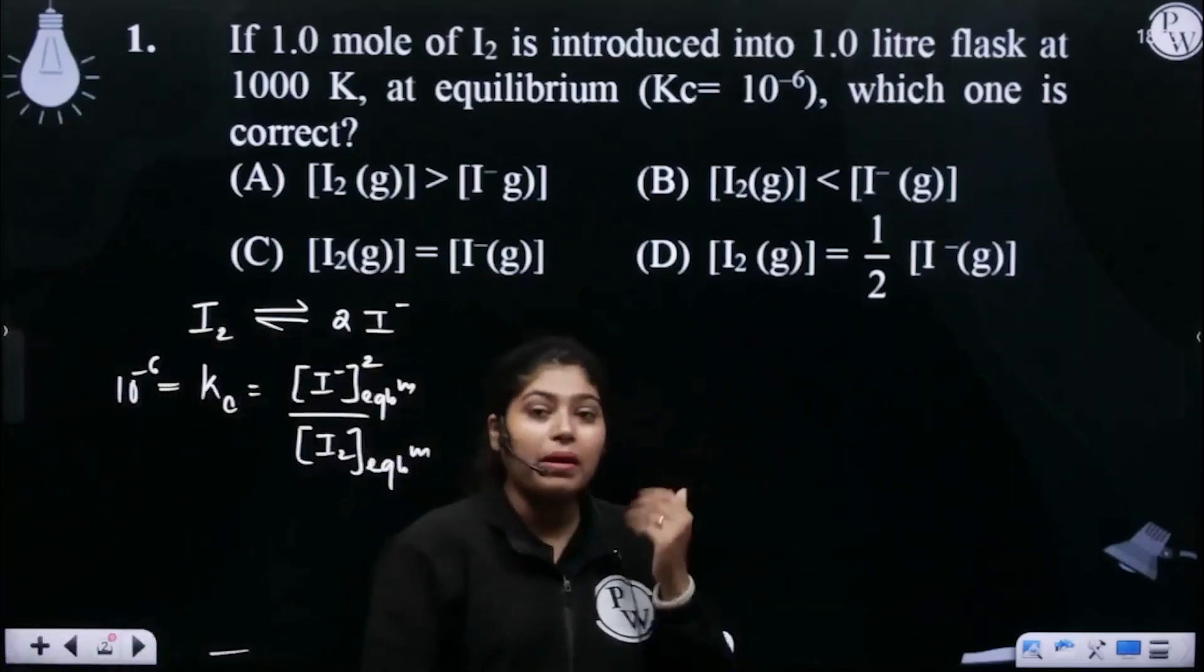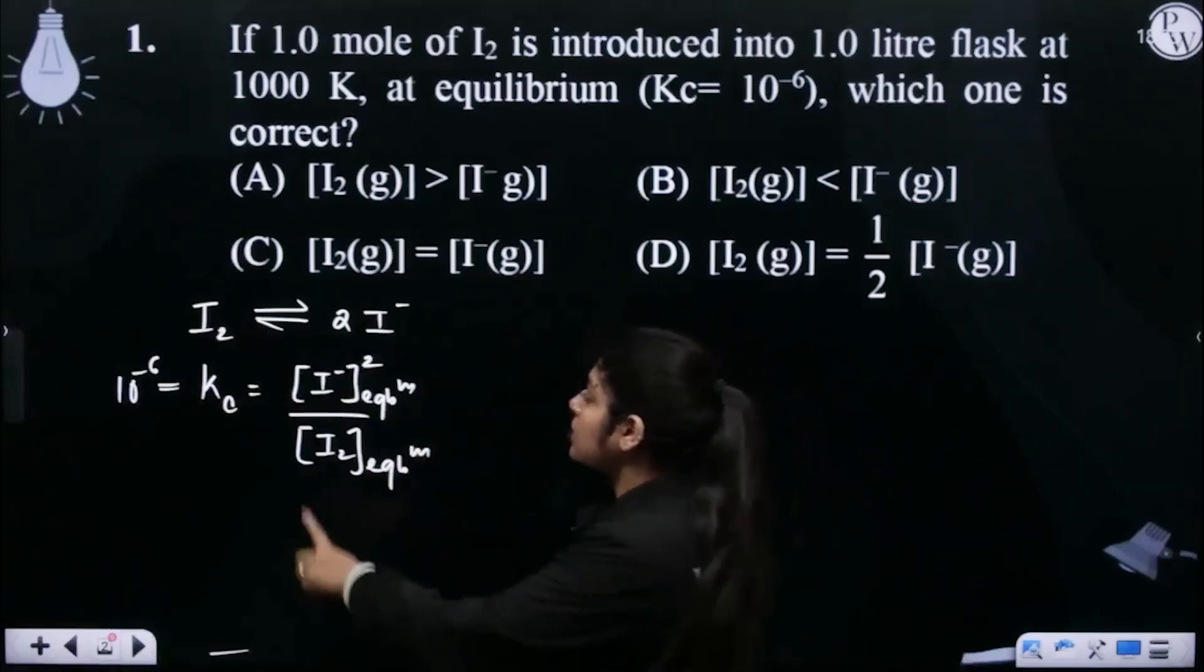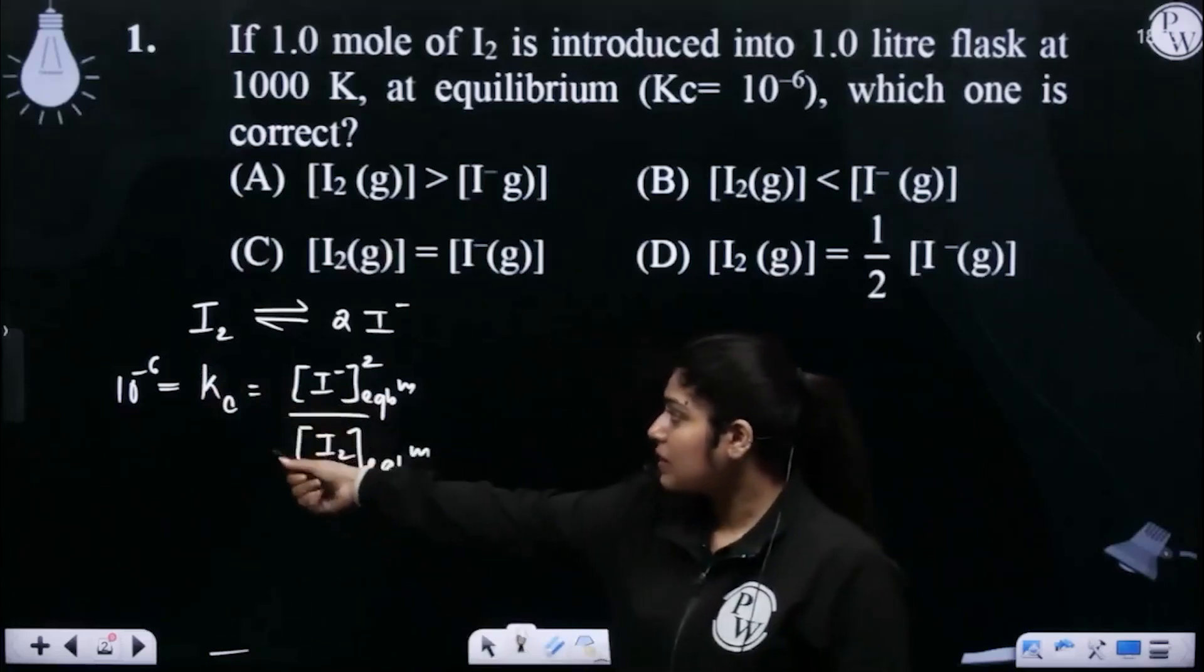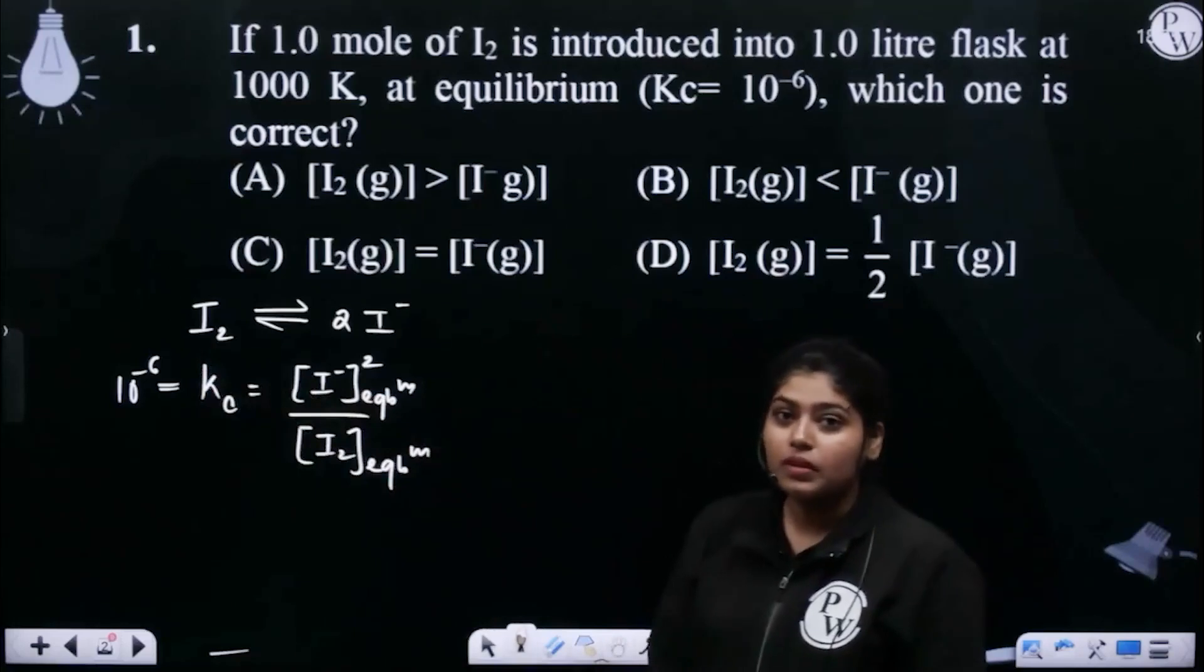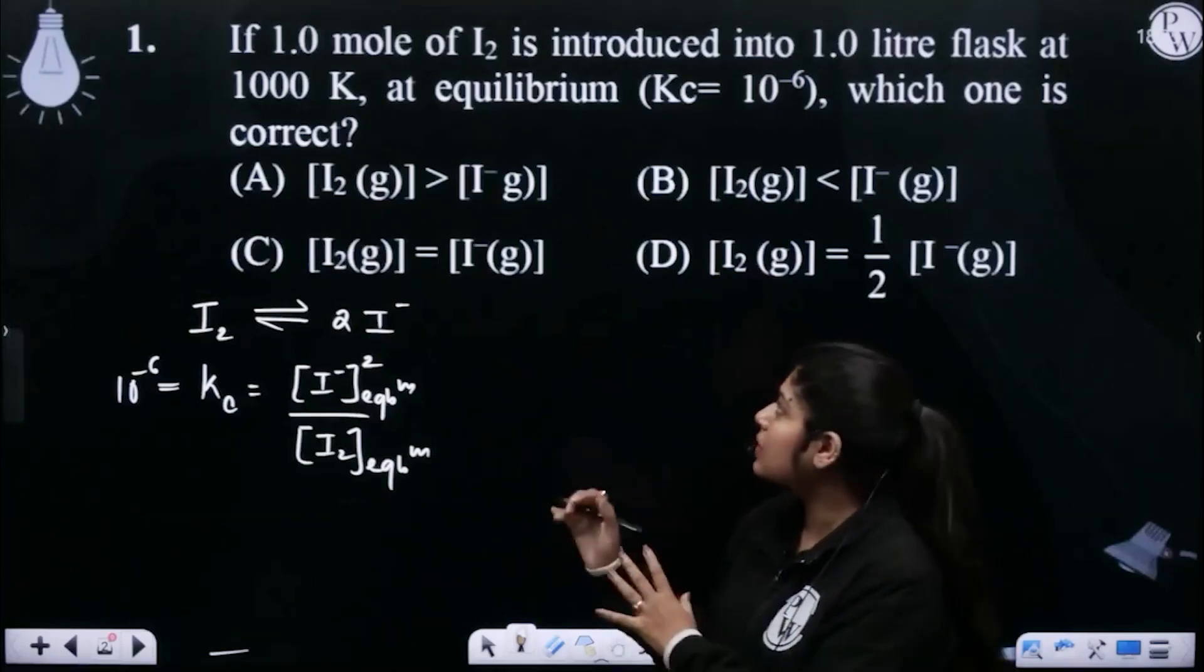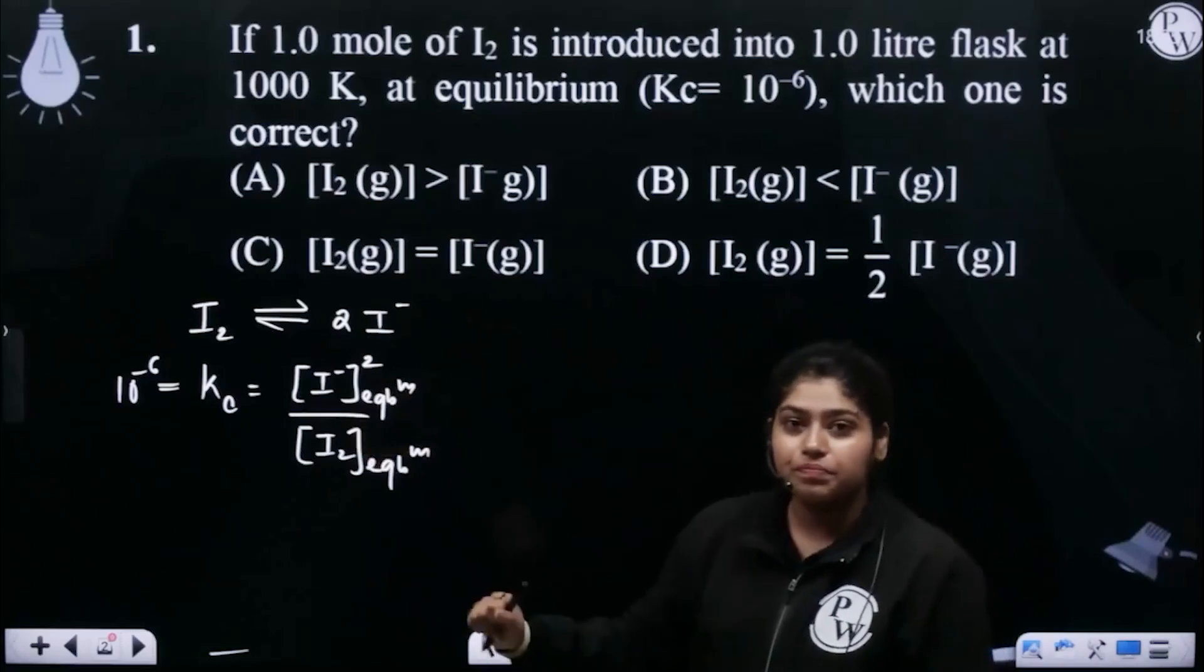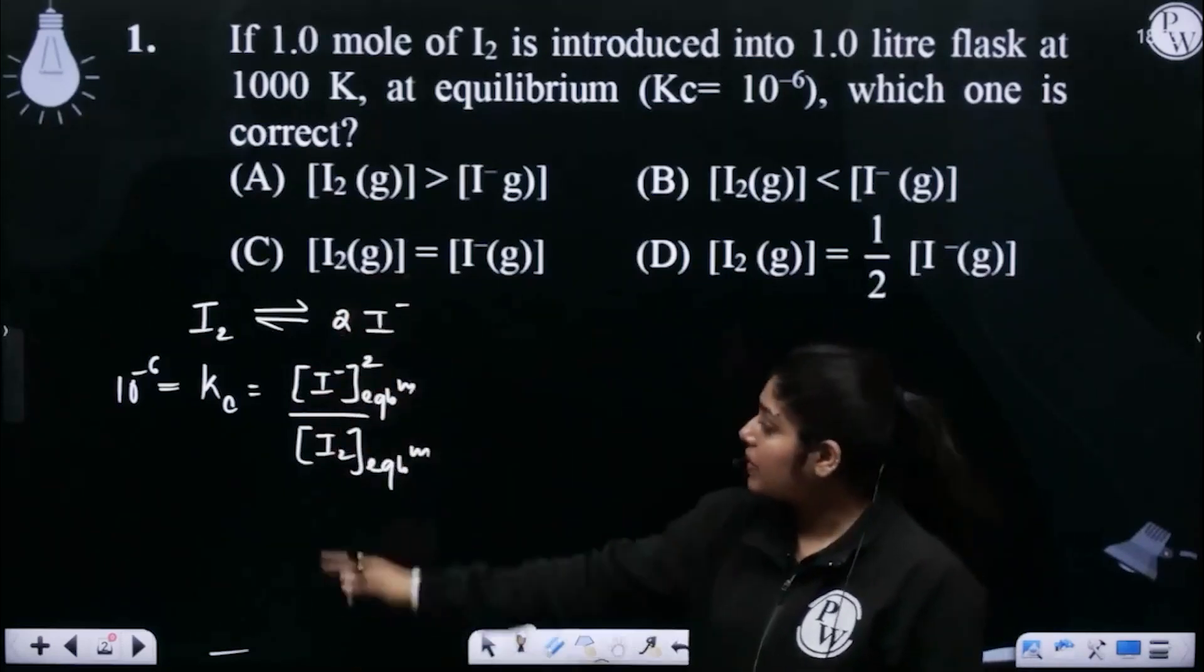Now Kc is 10 to the power minus 6. This means that Kc is very low. If Kc is low, then how will it be? Obviously if Kc is low, this means that the denominator will be more than the numerator. This means that the reaction just started, or you can say that the reactant is much more than the product. When Kc is low, if the product is low, then Kc's value would have been higher. But what we know from 10 to the power minus 6?